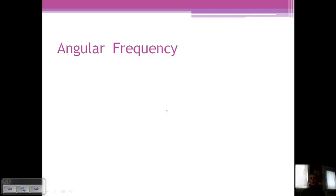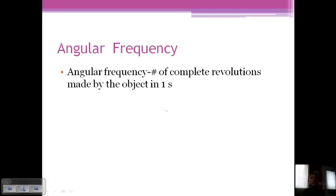The last part, and we don't really have one of these for linear, or that we've talked about very much, but is angular frequency. So angular frequency is the number of complete revolutions made by an object in one second. Maybe the closest we've talked about linearly is when we talk about waves as far as frequency. And so angular frequency is equal to the angular velocity divided by 2 pi.